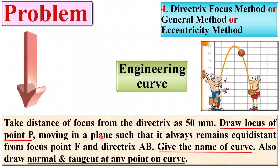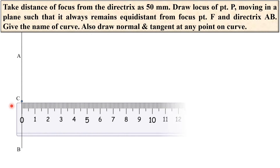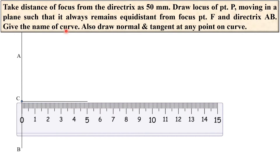Let us solve the problem step by step. First of all, draw the directrix and give the name AB — the directrix is the vertical reference line for the parabola. Now mark any one point randomly on this AB line and draw the horizontal line passing through this point C. The distance of focus from the directrix is given as 50 mm, so you can locate the focus point F exactly 50 mm from the directrix.